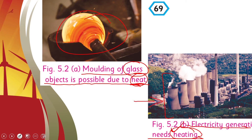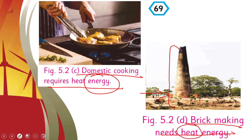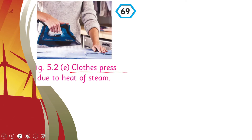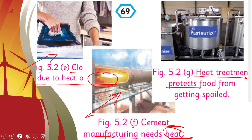Domestic cooking requires heat energy. Brick making needs heat energy — yahan pe bhi heat energy required hai to make the bricks. Clothes need heat and steam for pressing — daily basis pe jo kapade aap iron karti hain, they also need heat energy. Cement manufacturing needs heat energy to build buildings. Heat treatment also protects food from getting spoiled — jaise ke doodh ko pasteurize kiya jata hai, at a very high temperature garam kiya jata hai jiski wajah se isko preserve kiya jata hai.